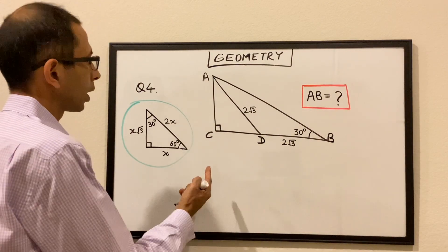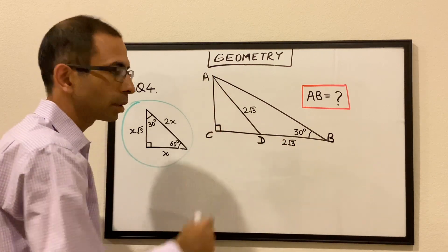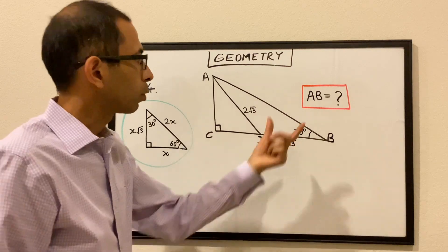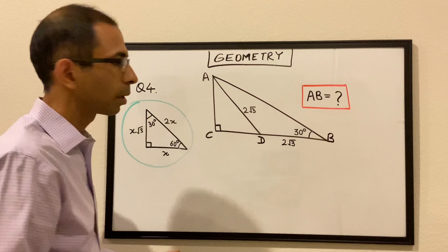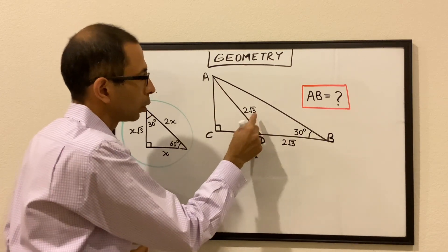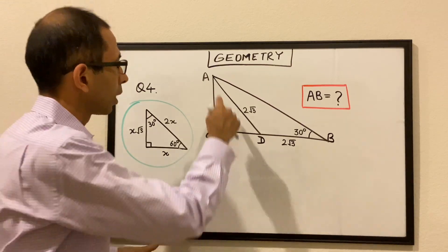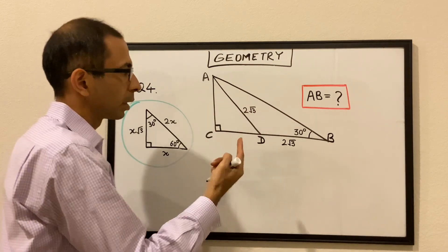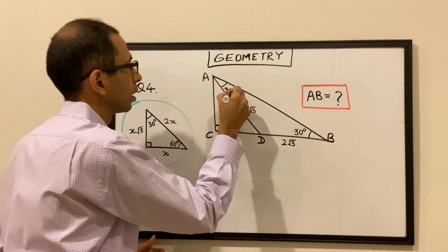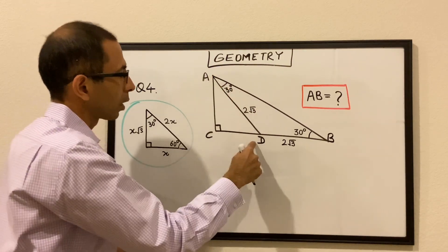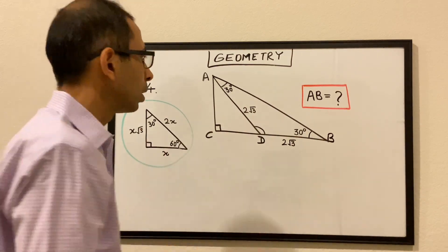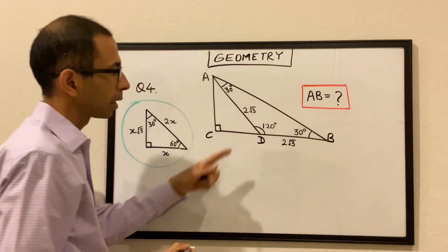Let's move into our fourth question. We have a right angle triangle ACB. Angle ACB is 90 degrees, angle CBA is 30 degrees, and these two sides are equal: DB is equal to AD, both equal to 2 root 3. We have to find the length of AB. Since both sides are 2 root 3 and equal, this triangle becomes an isosceles triangle. In an isosceles triangle, the two opposite angles are also equal, hence if this angle is 30 degrees, this angle would also be 30 degrees.